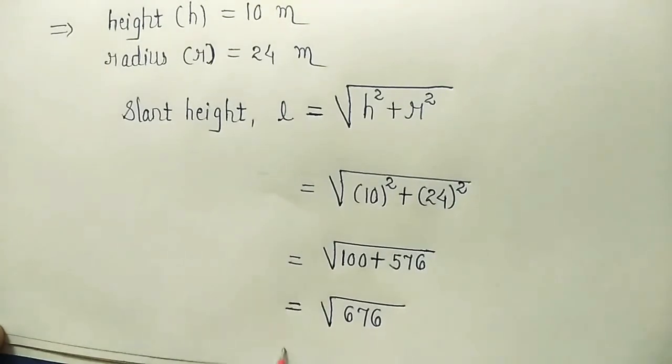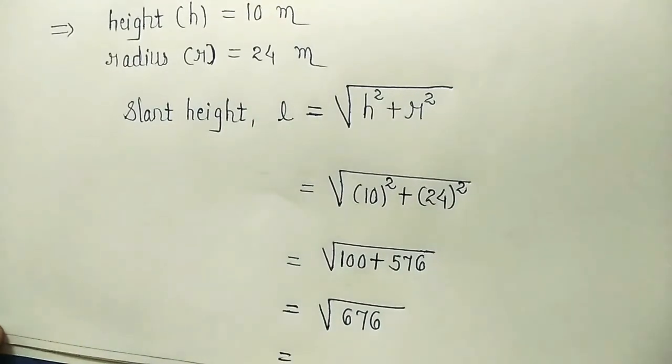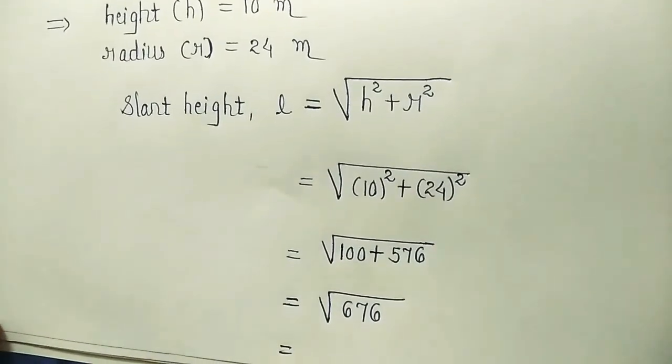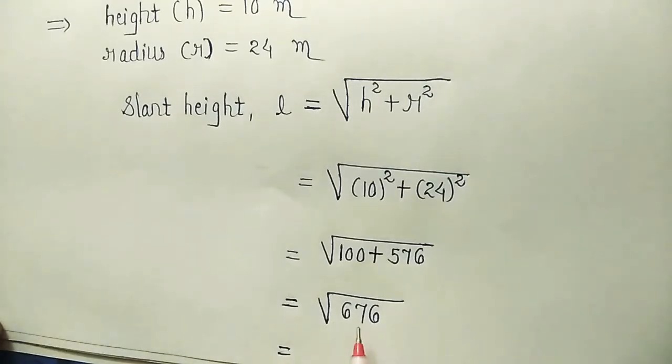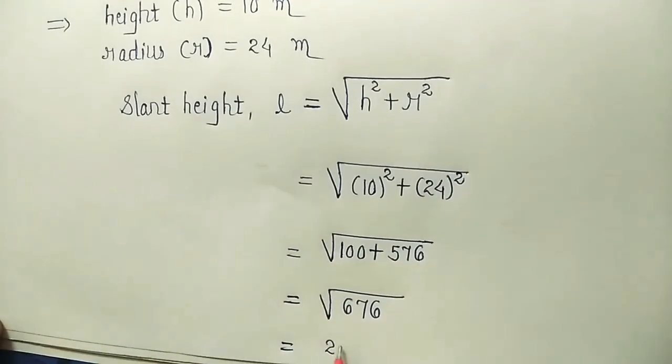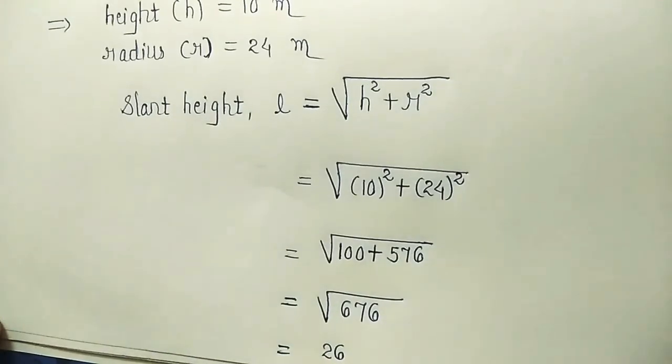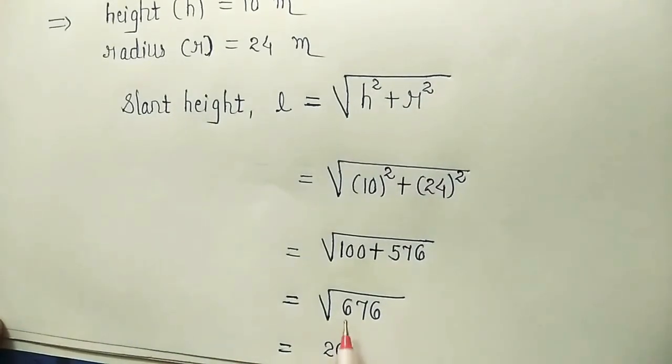Now square root of 676 is what? Recall what you have learned in standard 8. Squares and square roots of some numbers. 676. So 676 is square of which number? It is square of 26.